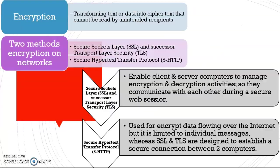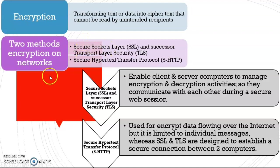Encryption is the transforming of text or data into ciphertext that cannot be read by unintended recipients. In encryption we have two methods: the first is Secure Socket Layer and its successor Transport Layer Security — SSL and TLS — and the second is Secure Hypertext Transfer Protocol, S-HTTP.